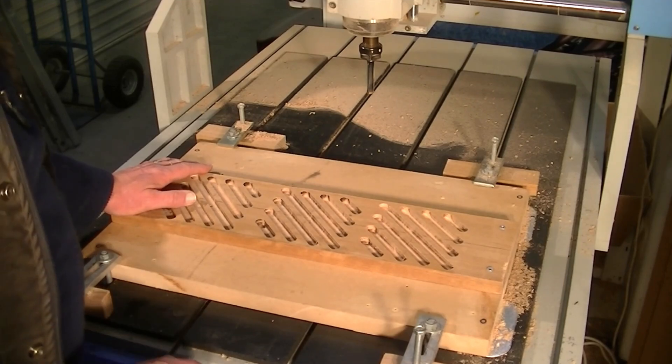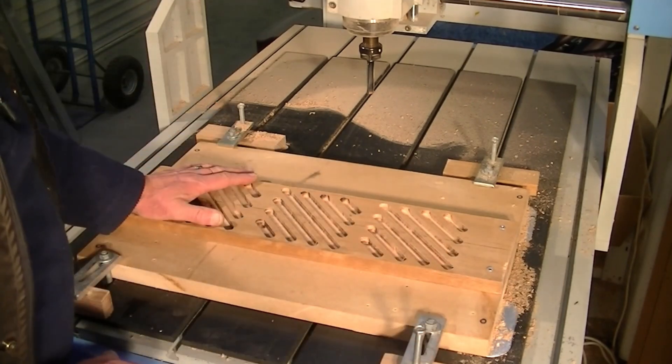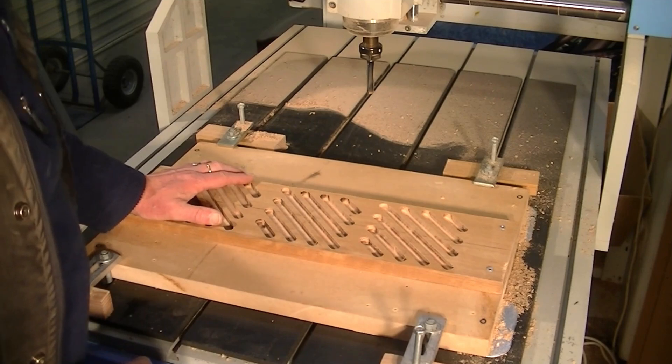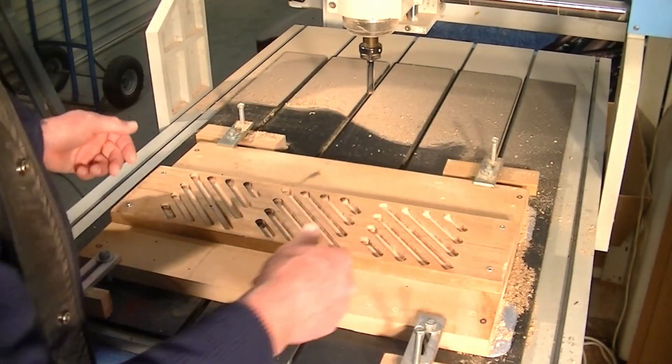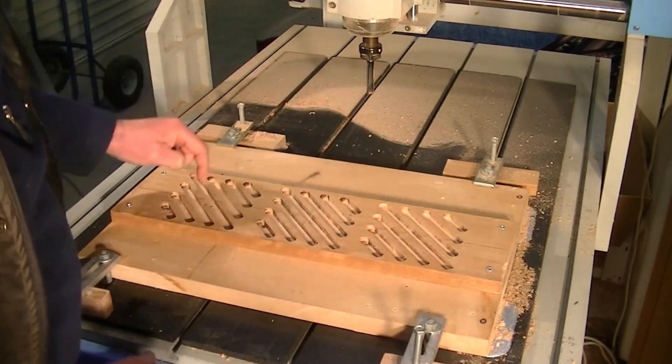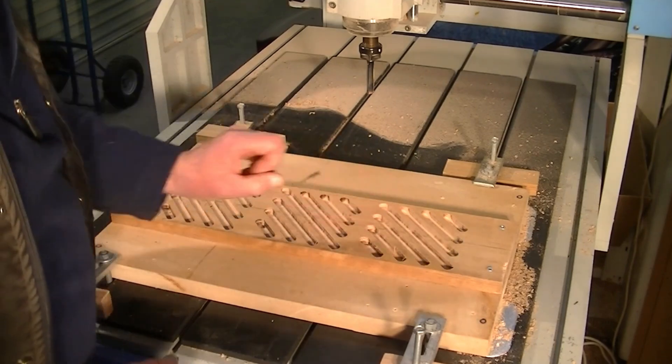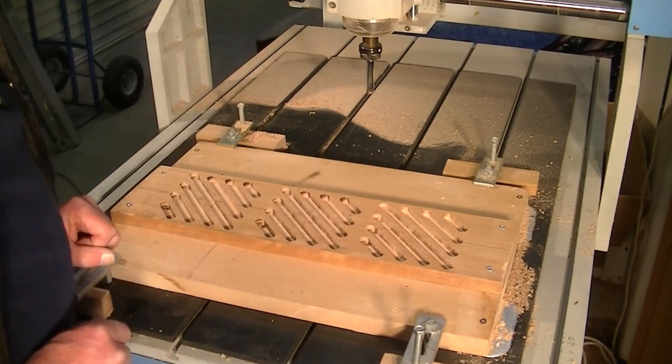It would be quicker if I did it by hand with a piece of emery or a piece of glass paper or something. So anyway, let's call that one side done. So now we're going to flip it over and zero to each of these set of holes here and cut the other side.